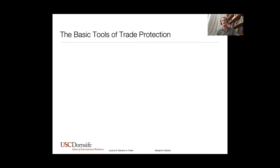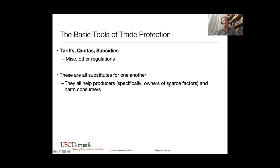But if you are a government and you want to throw some sand in the wheels here — which you may want to do for a variety of pretty good reasons, protecting folks who are going to lose out from free trade, industries that may not quite be globally competitive but you don't want them to go away altogether — then you may need to step in and protect them. We're going to look at three main tools. Governments can get creative with wide varieties of what we'll call non-tariff barriers, but tariffs, quotas, and subsidies are really the big tools of trade protection. They're all substitutes for one another. They all help producers — specifically owners of scarce factors of production who are going to lose out due to free trade — and they tend to harm consumers, who want to buy the cheapest possible goods.